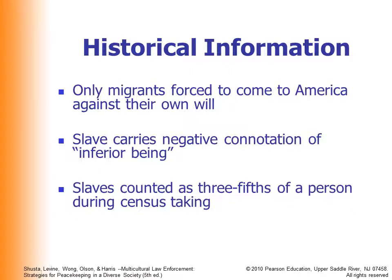Even the U.S. government counted Blacks as only three-fifths of a person during the census. The reason they were called three-fifths of a person is that the South wanted federal tax money based on their population of African-American slaves, and unless they counted them they didn't receive any federal funds.